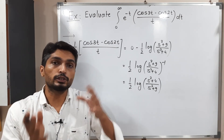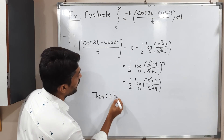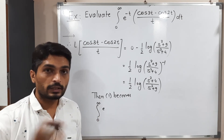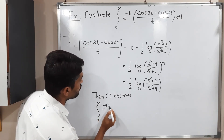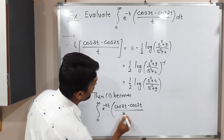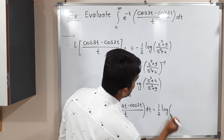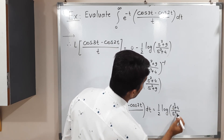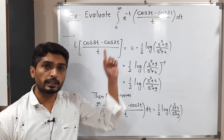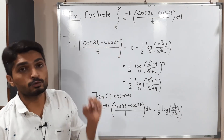We can now substitute this value into equation number 1. Equation 1 states: the integral from 0 to infinity of e raised to minus st times (cos 3t minus cos 2t)/t dt equals (1/2) log[(s² + 4)/(s² + 9)]. The only difference between the given integral and this integral is that the given one has e^(−t) while ours has e^(−st).